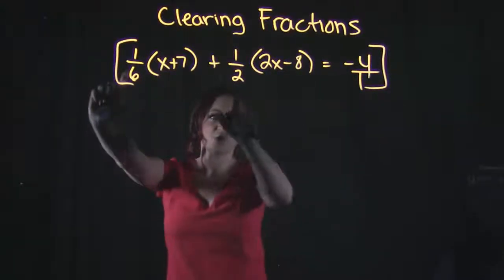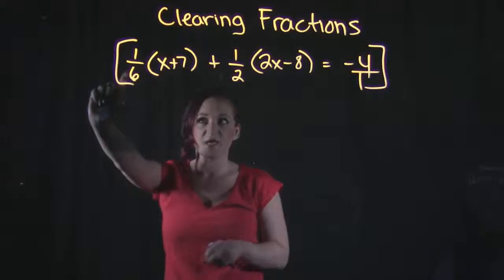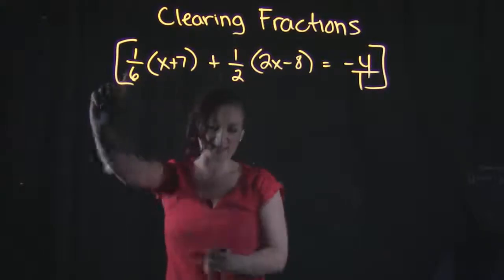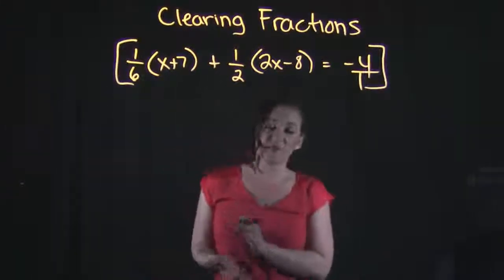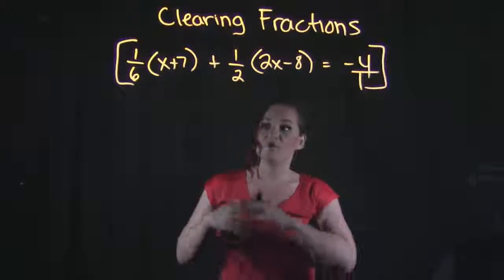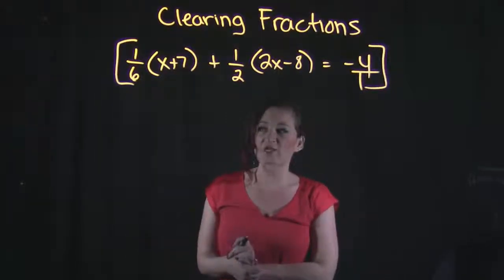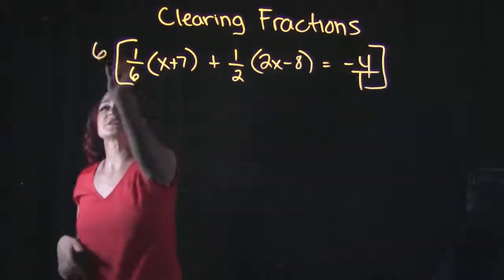One definitely goes into six, two goes into six, and six goes into six. Therefore, six would be our lowest common denominator for all three of these fractions.